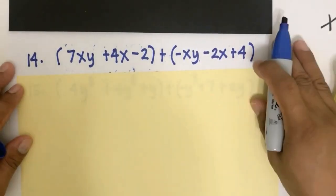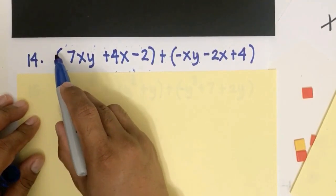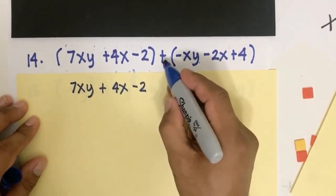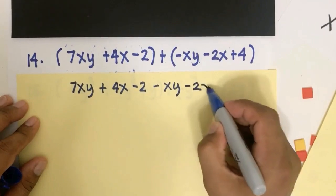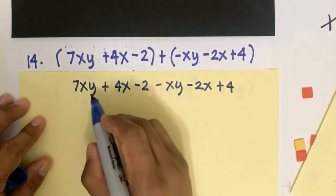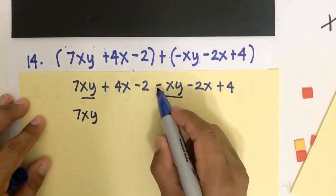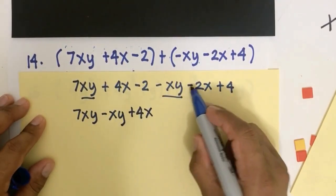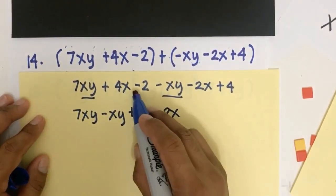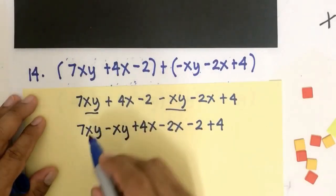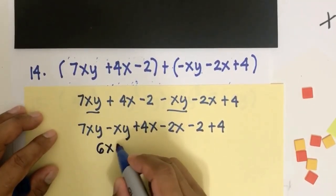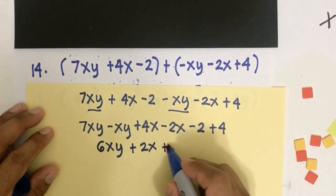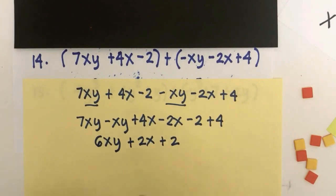For (7xy plus 4x minus 2) plus (negative xy minus 2x plus 4): first remove parentheses. Then combine like terms: 7xy and minus xy are like terms giving 6xy; 4x and minus 2x give positive 2x; negative 2 plus 4 gives positive 2. The final answer is 6xy plus 2x plus 2.